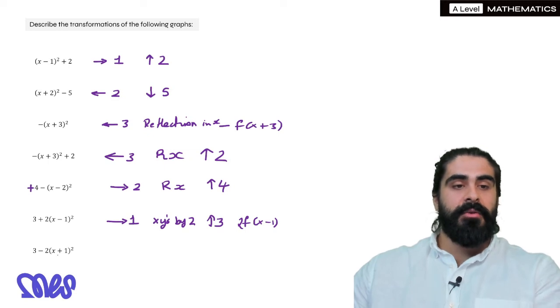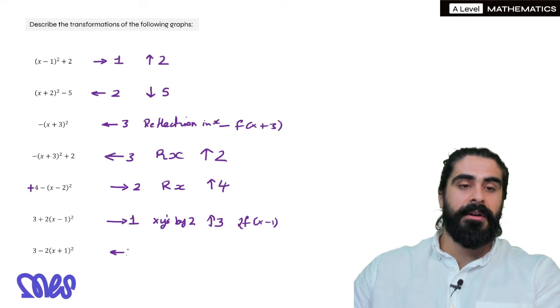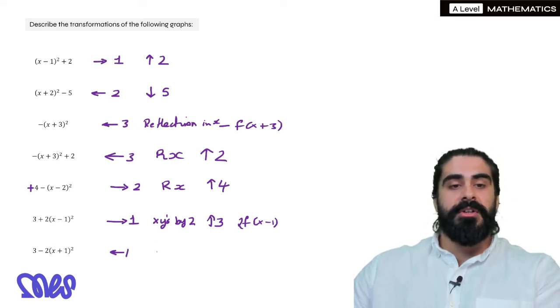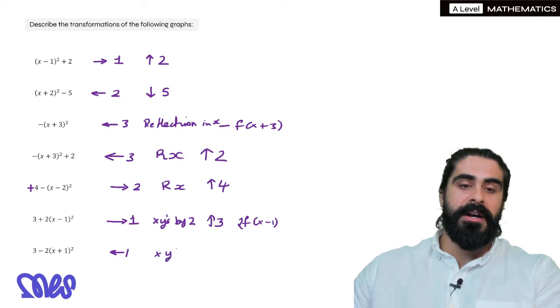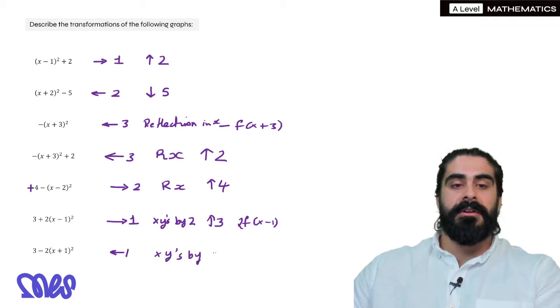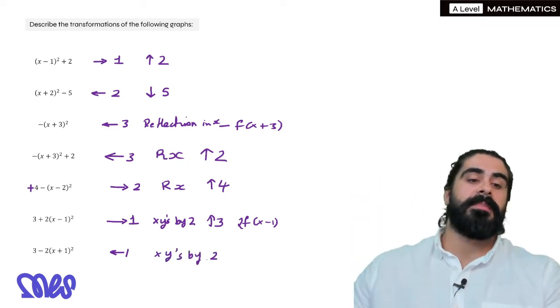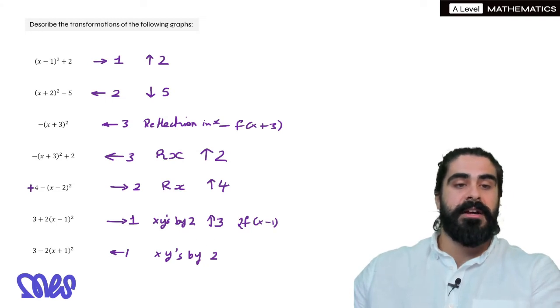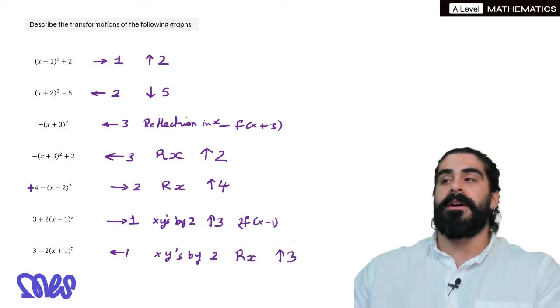Last one. All the combinations: (x+1)² means we're going to move to the left by 1. The 2 at the front means we're going to times all the y's by 2, which is a stretch by scale factor 2 on the y-axis. The minus means we're going to reflect in the x-axis and then that 3 means we're going to move the graph up by 3.